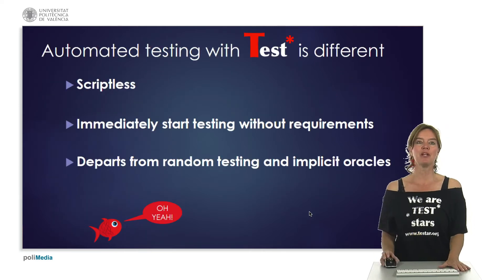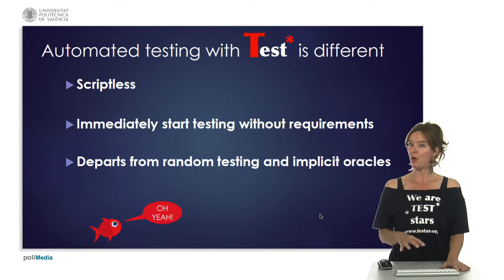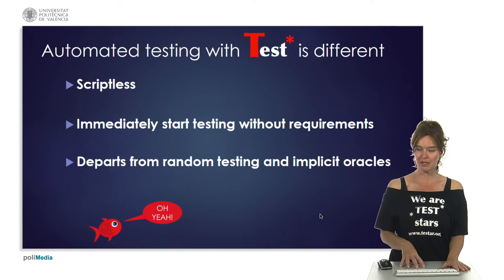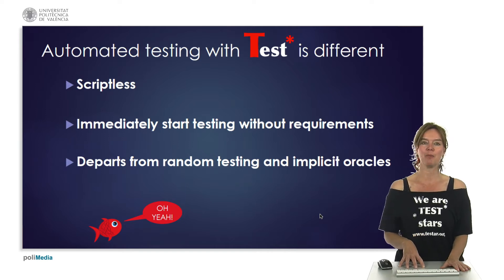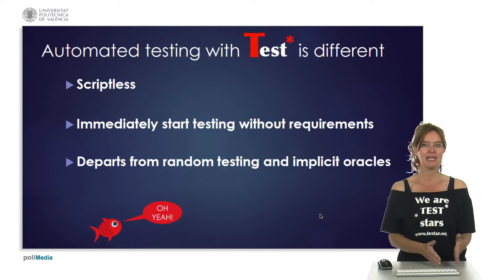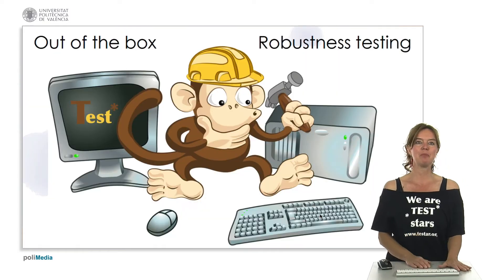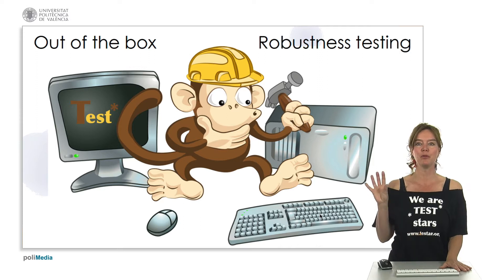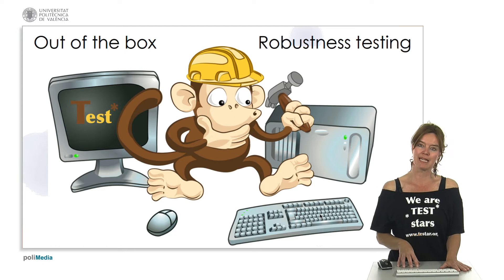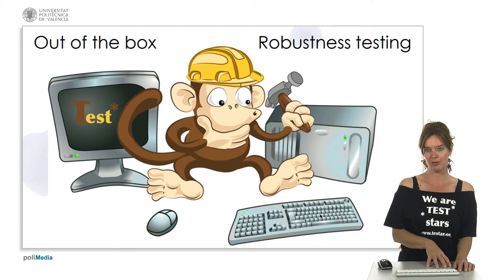As we've seen in previous videos, automated testing with Testar is different. We don't have any scripts, so it's scriptless. We can immediately start testing without any requirements, starting out of the box with random testing and implicit oracles. Random testing means that out of the box we will be doing robustness testing — monkey testing where we select every action at random to be executed in the next state.